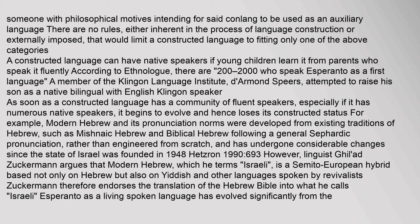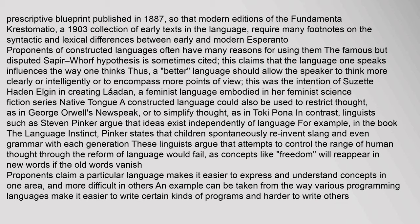Modern Hebrew was developed from existing traditions of Hebrew, such as Mishnaic Hebrew and Biblical Hebrew following a general Sephardic pronunciation, rather than engineered from scratch, and has undergone considerable changes since the State of Israel was founded in 1948. Linguist Gilad Zuckerman argues that modern Hebrew, which he terms 'Israeli,' is a Semito-European hybrid based not only on Hebrew but also on Yiddish and other languages. Esperanto as a living spoken language has evolved significantly from the prescriptive blueprint published in 1887.